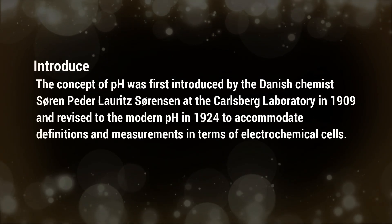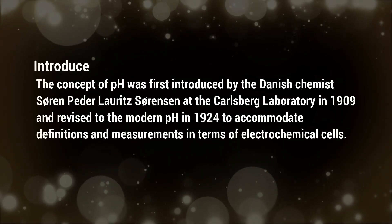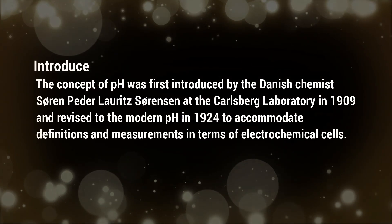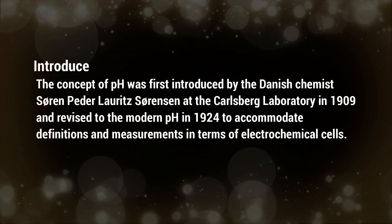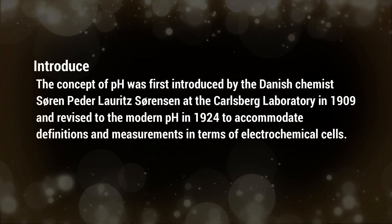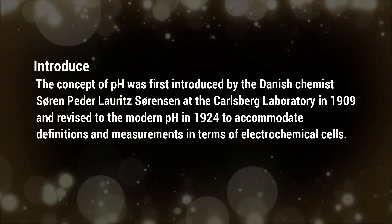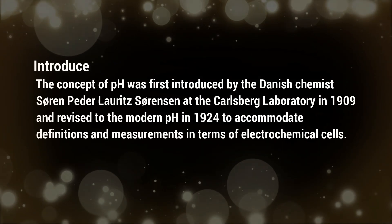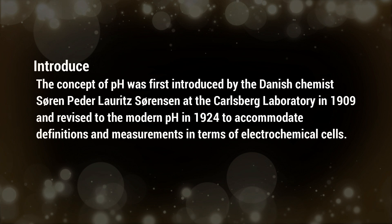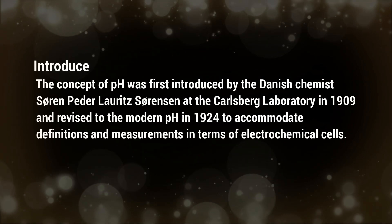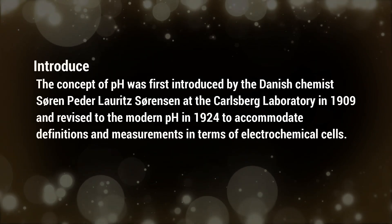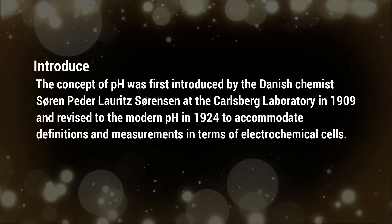The concept of pH was first introduced by the Danish chemist Søren Peder Lauritz Sørensen at the Carlsberg Laboratory in 1909, and revised to the modern pH in 1924 to accommodate the definitions of measurements in terms of electrochemical cells.